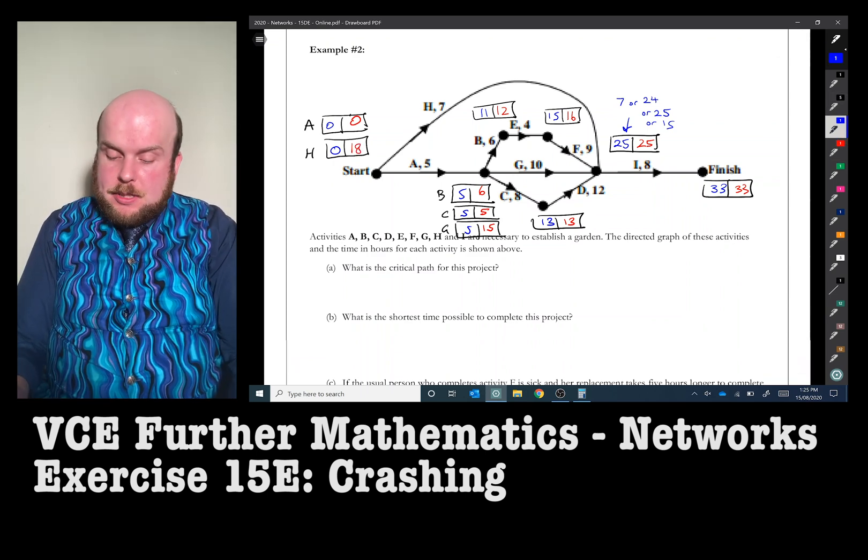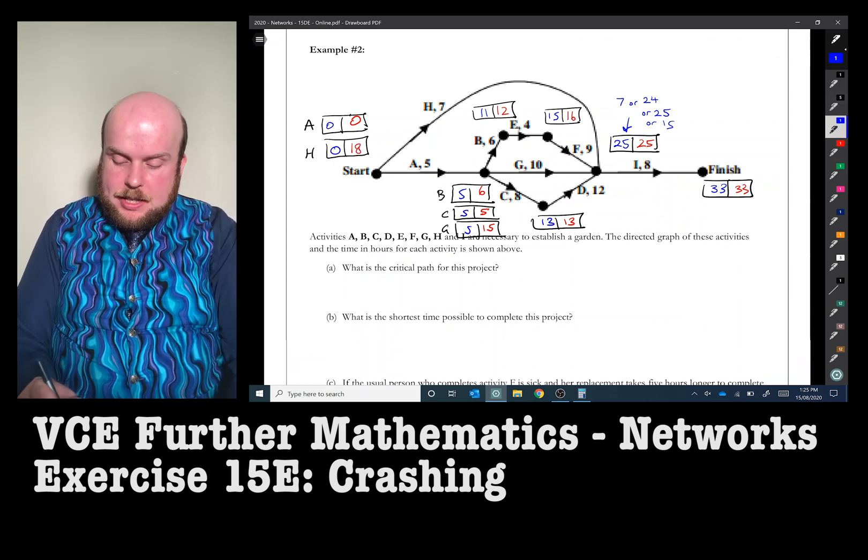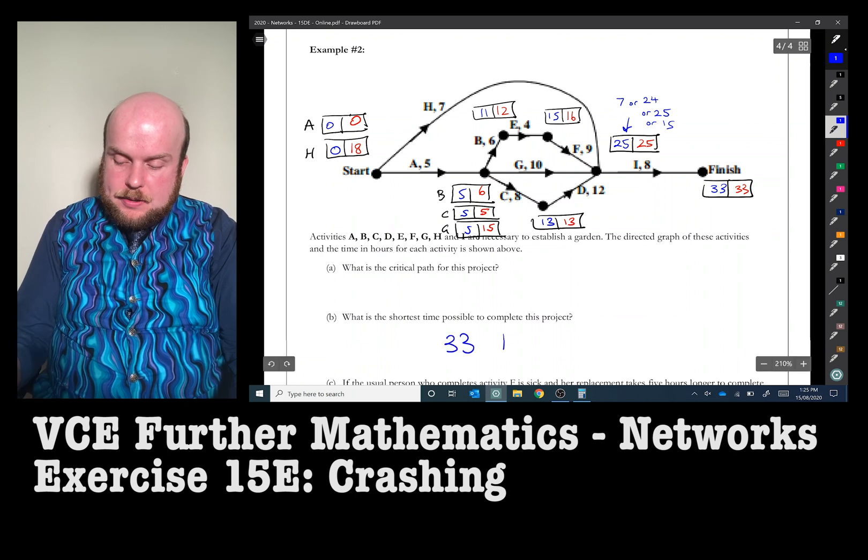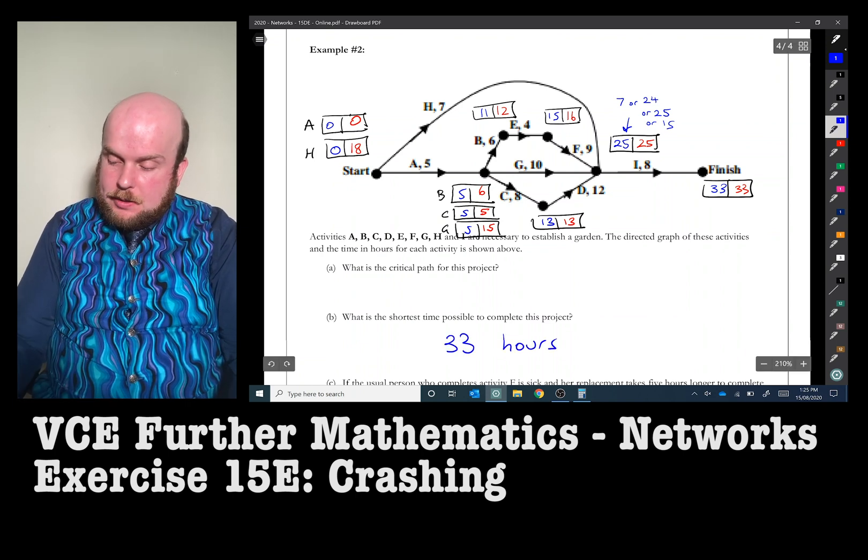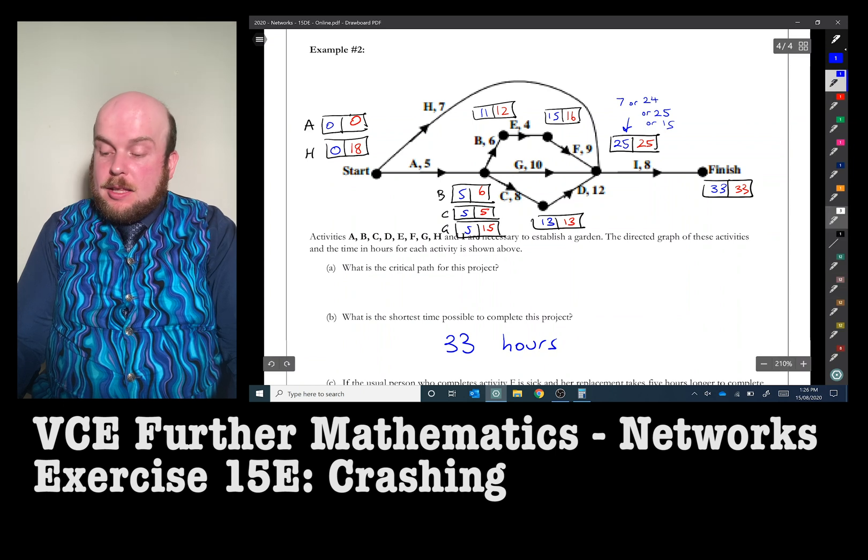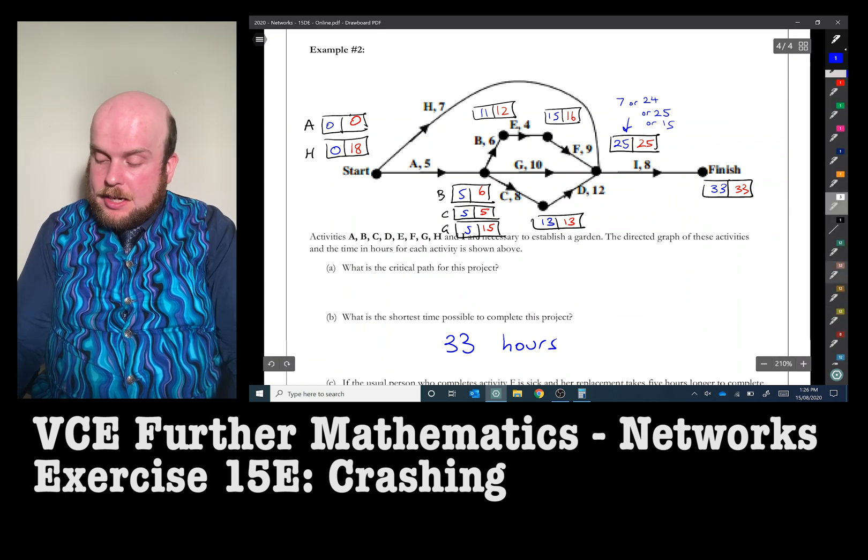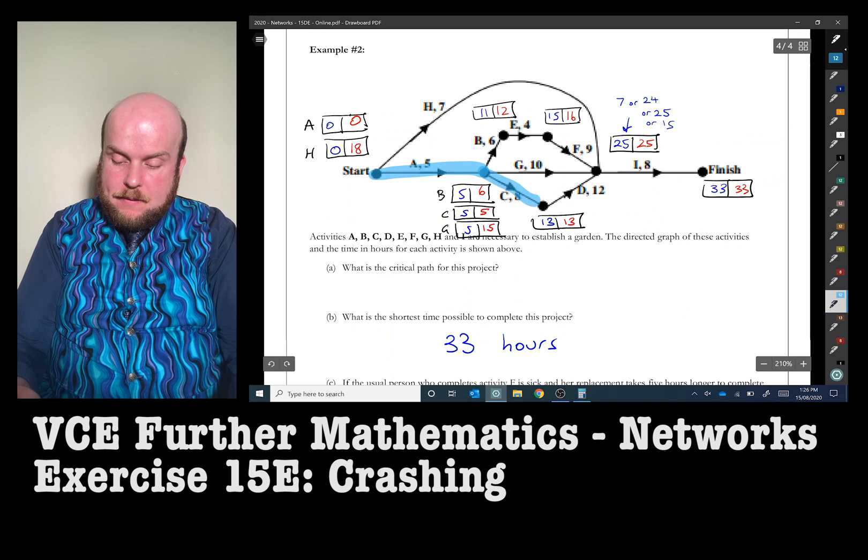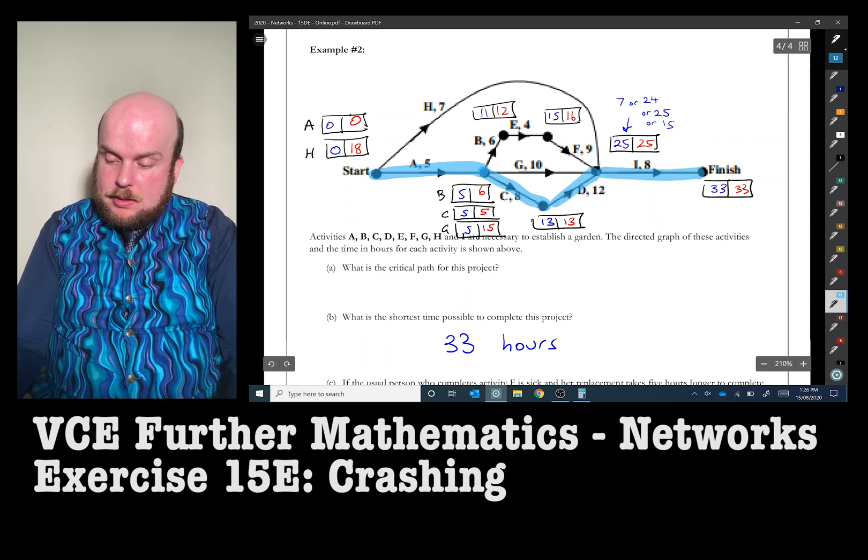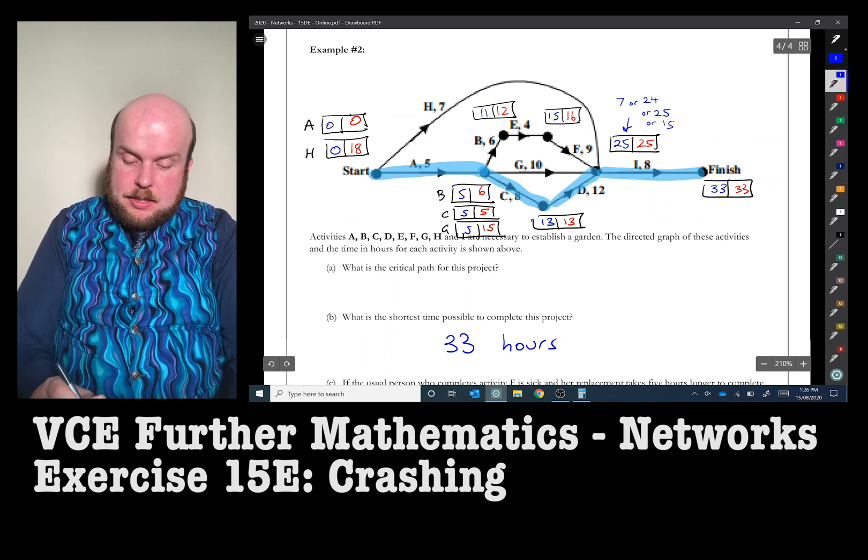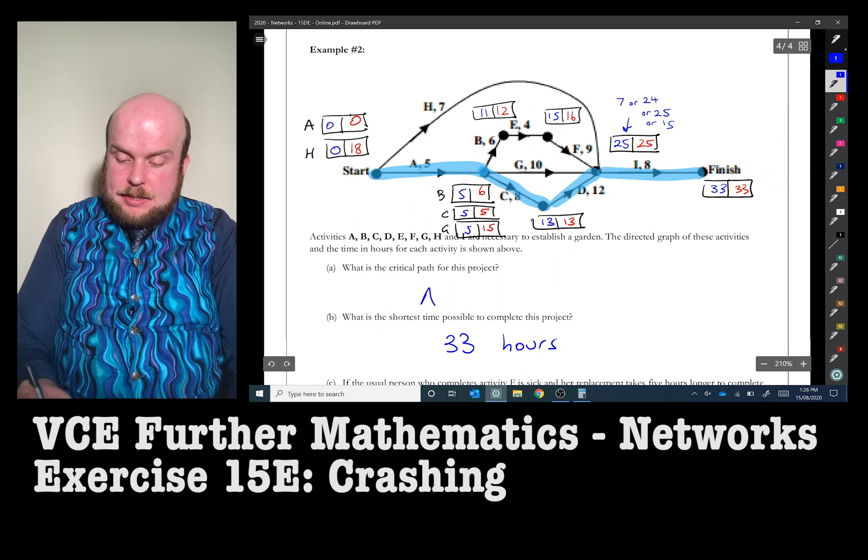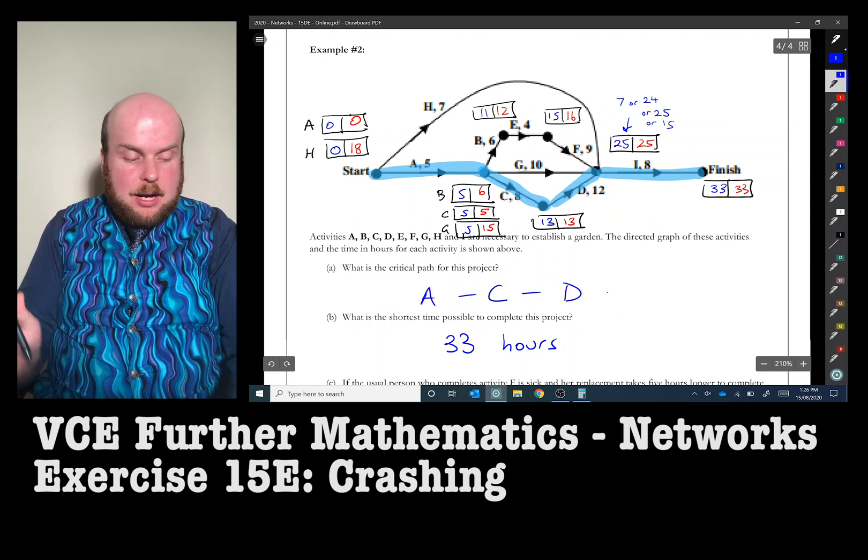So I've done my forwards and backwards scanning. I can see that it will take 33 hours, and so the critical path will be the ones with the latest starting time and the earliest starting time being the same value. Therefore, this is our critical path: A to C to D to I.